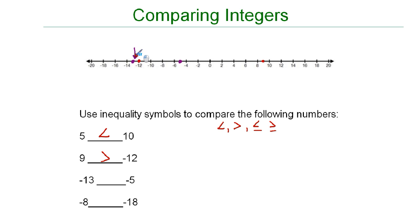Negative 13 is farther away from 0, which means that it's less than negative 5, which is a little closer to 0. So I would say that negative 13 is less than negative 5. It's important to remember that the farther away from 0 on the number line you are, if you're working on the negative side, the smaller the number.